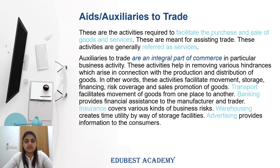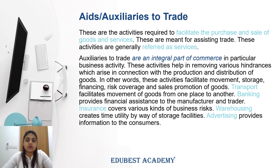The next part of commerce is auxiliaries to trade. Auxiliaries to trade assist trade — all those activities that facilitate the purchase and sale of goods and services, help them, and upgrade them. These activities are generally referred to as services: transport, banking, insurance, warehousing, advertising, and so on. Auxiliaries are considered an integral part of commerce because they help remove all obstacles in the production and distribution of goods, and facilitate the movement of goods, storage, and financing, so that goods can easily reach from producer to consumer.